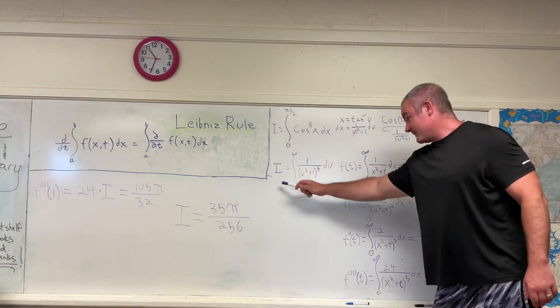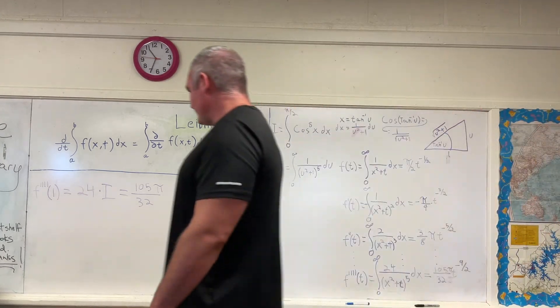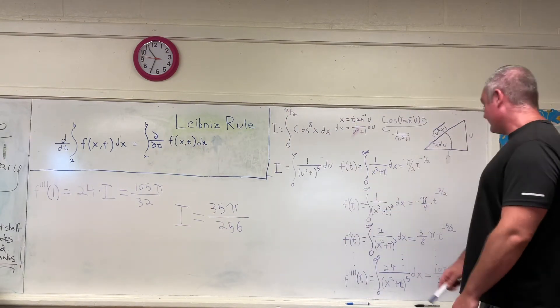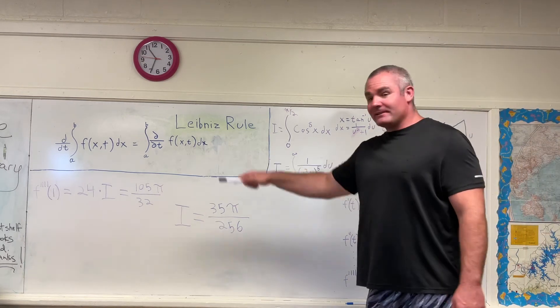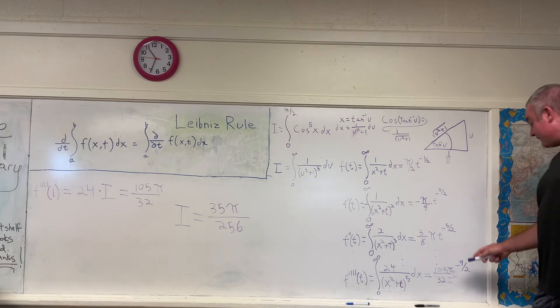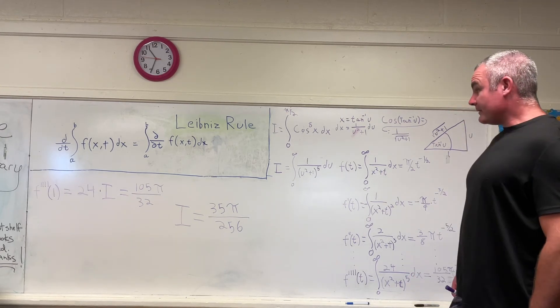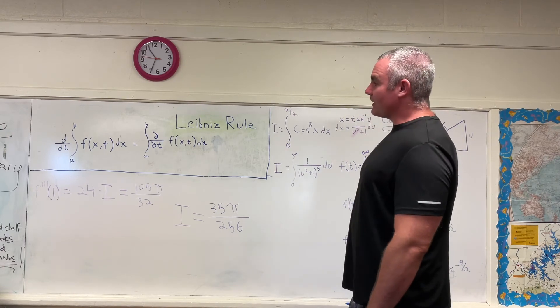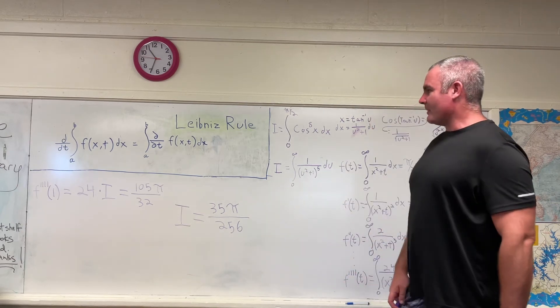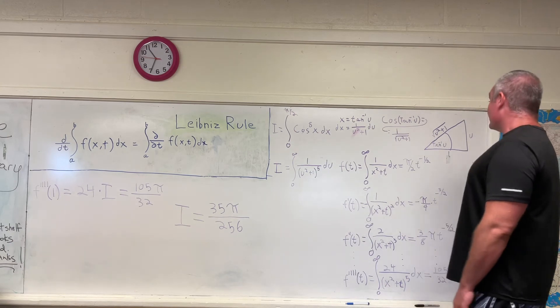So stepping over here, we can see that f quadruple prime evaluated at the point t equals one. We plug in a one there. We're going to get 24 times i. That should be easy to see. And that's going to be equal to what you get if you plug in t equals one here also, which is 105 pi over 32. But we're not interested in what 24 times i is. We're interested in i. And what you get if you divide both sides of that equation by 24 and then reduce is that i is equal to 35 pi over 256. So that's it.